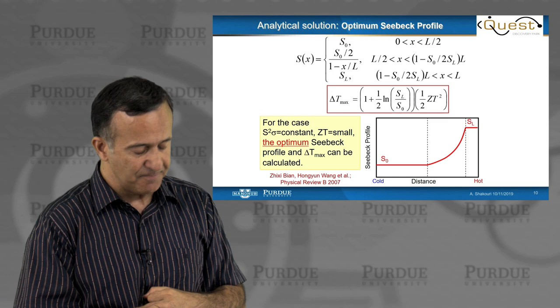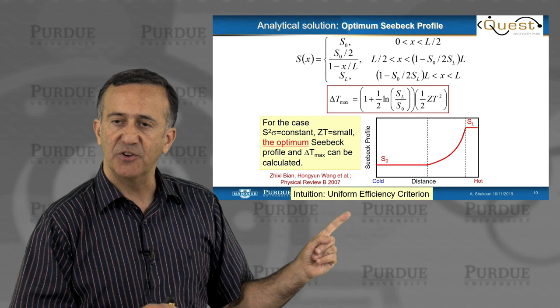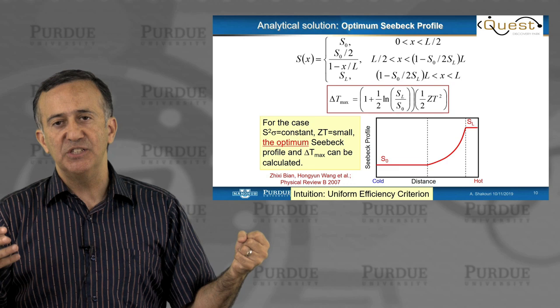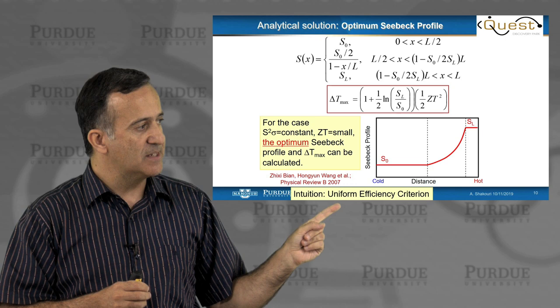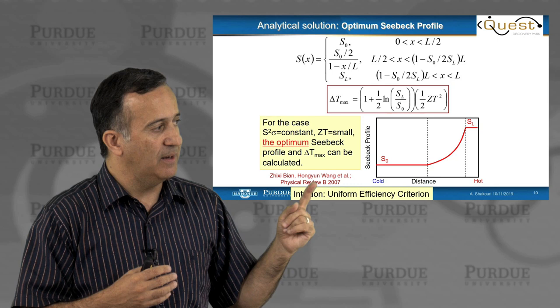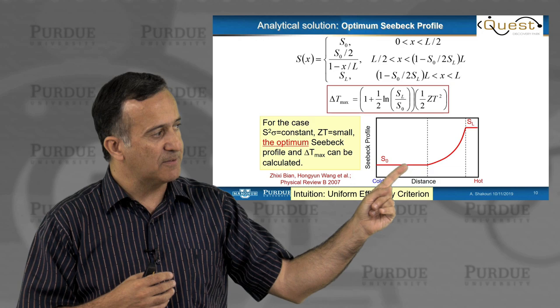Why there is this curious shape of the Seebeck is not actually at all obvious. And this is analytical. You get it by the math. But what is the intuition? One of the intuition they came out is what is called uniform efficiency criteria. Is that as you move through the material, instead of considering thermoelectric material as a whole, as an energy conversion, you can look at energy conversion locally. And this uniform efficiency criteria tell you that with this type of profile, the efficiency of the cooling is uniform locally. And because as you cool the device, one side becomes cooler than the others. That's why there is trade-offs between Seebeck and electrical conductivity.